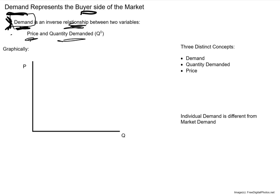Those two variables are price and quantity demanded. Demand is a relationship between these two things, so let's make sure we understand exactly what those variables represent. Price, to a buyer, represents the amount of money they have to give up when they buy something. You go in, you want to buy a sub, you're going to hand over some money in exchange. How much money you hand over is the price you pay as a buyer on your side of the transaction.